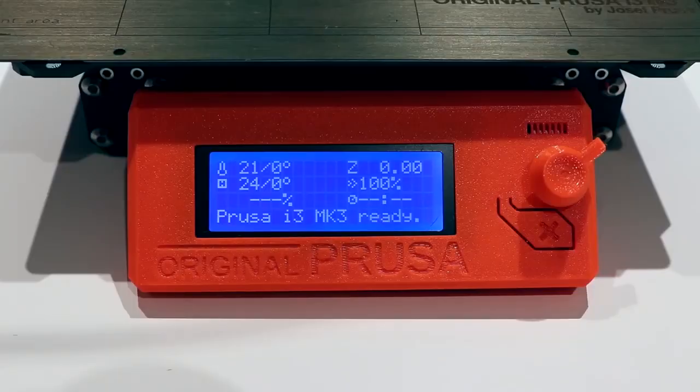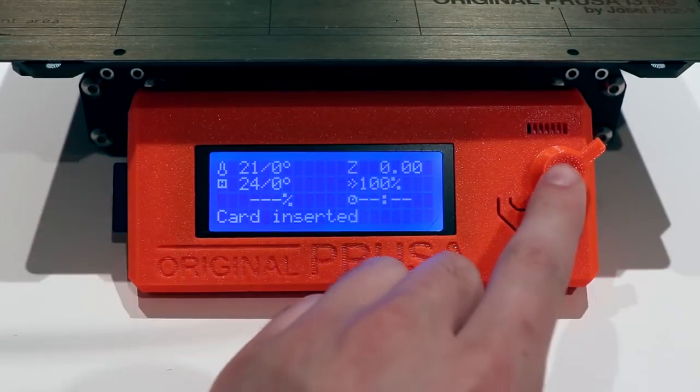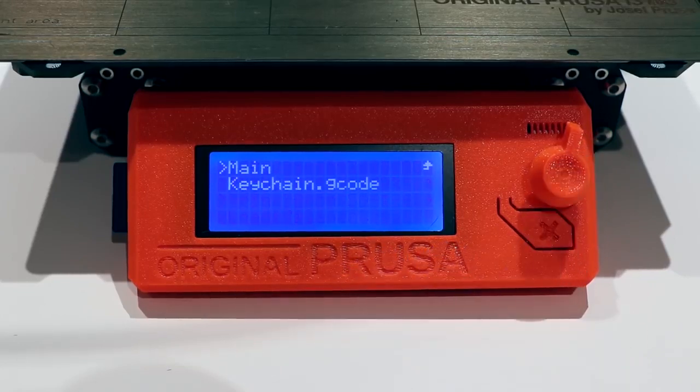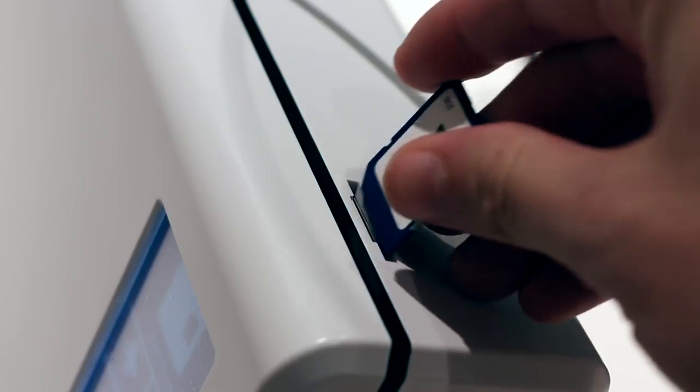If we insert our printer SD card, we will see that the file name is the same as the project name in Canvas. Next, we will insert the SD card into the Palette 2 like so.